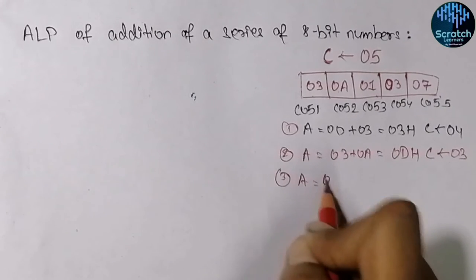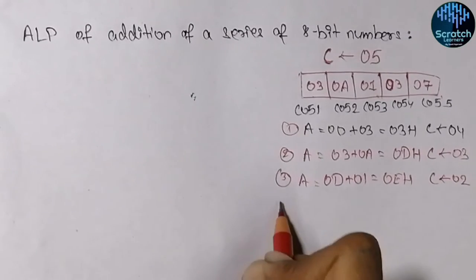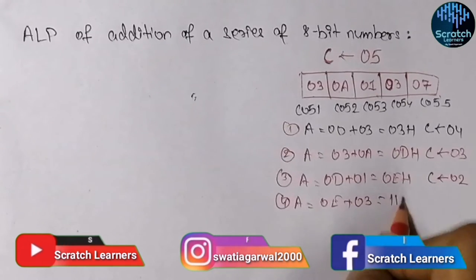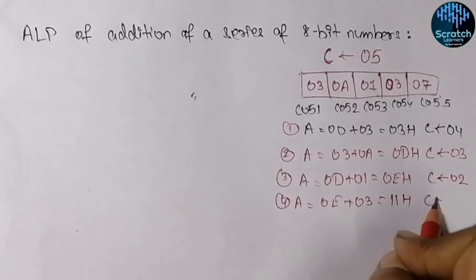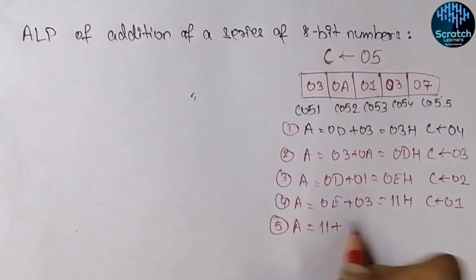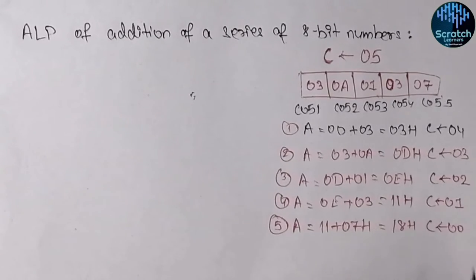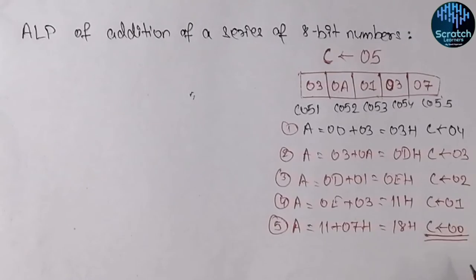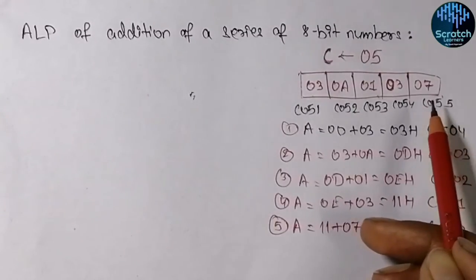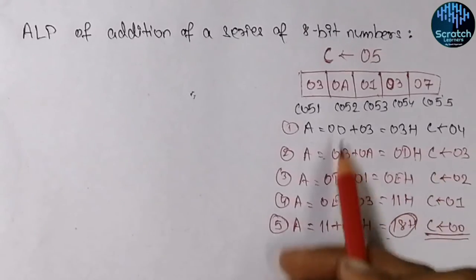In the third step, the third data is added with the accumulator: 0D plus 01 equals 0E hex, and C becomes 02. Then A becomes 0E plus 03 which gives 11 hex, and C is decremented to 01. In the last step, 11 is added with 07 to give 18 hex, and C becomes 00. When C becomes 00, it means we have added all elements in the array and 18 hex is the answer, which we store in some location.